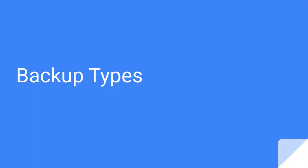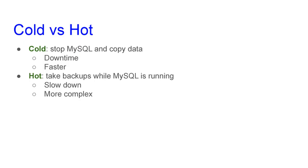There are several classifications of backups — useful to understand which types you should choose and why. The first classification is cold backup versus hot backup. A cold backup is taken when MySQL is down — you turn it off and take the backup. This implies downtime, but at the same time it is faster both to take and to restore.